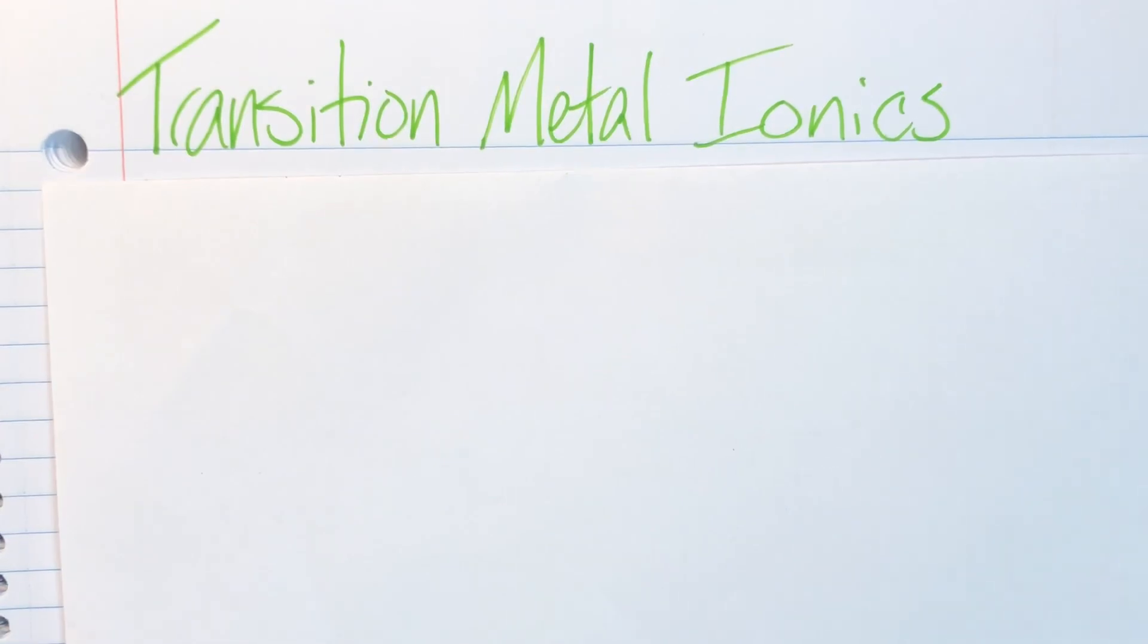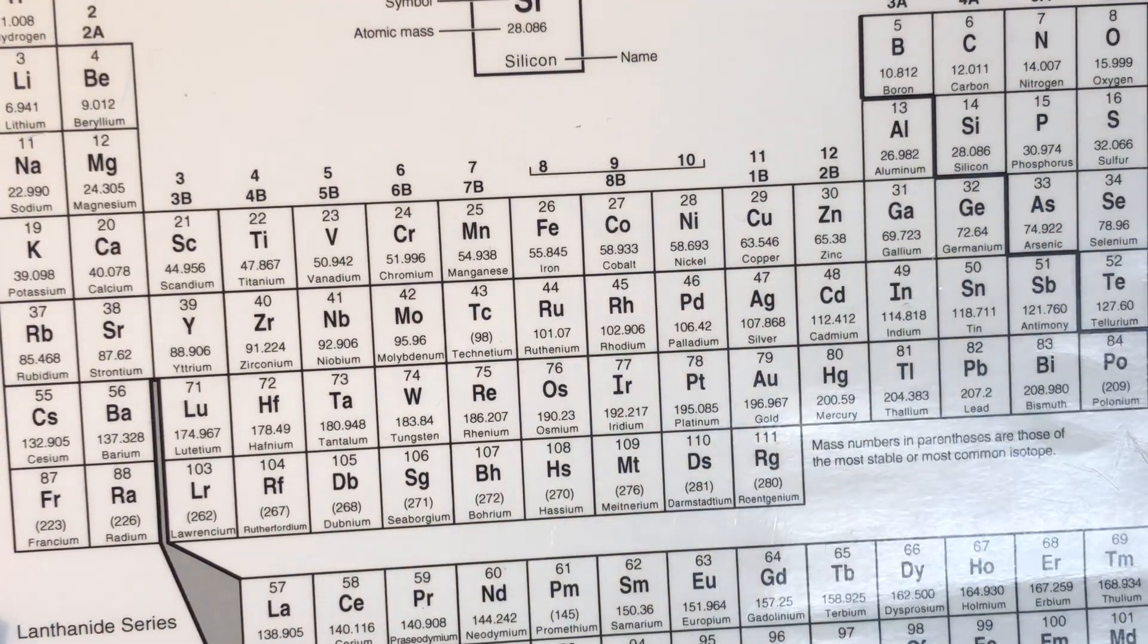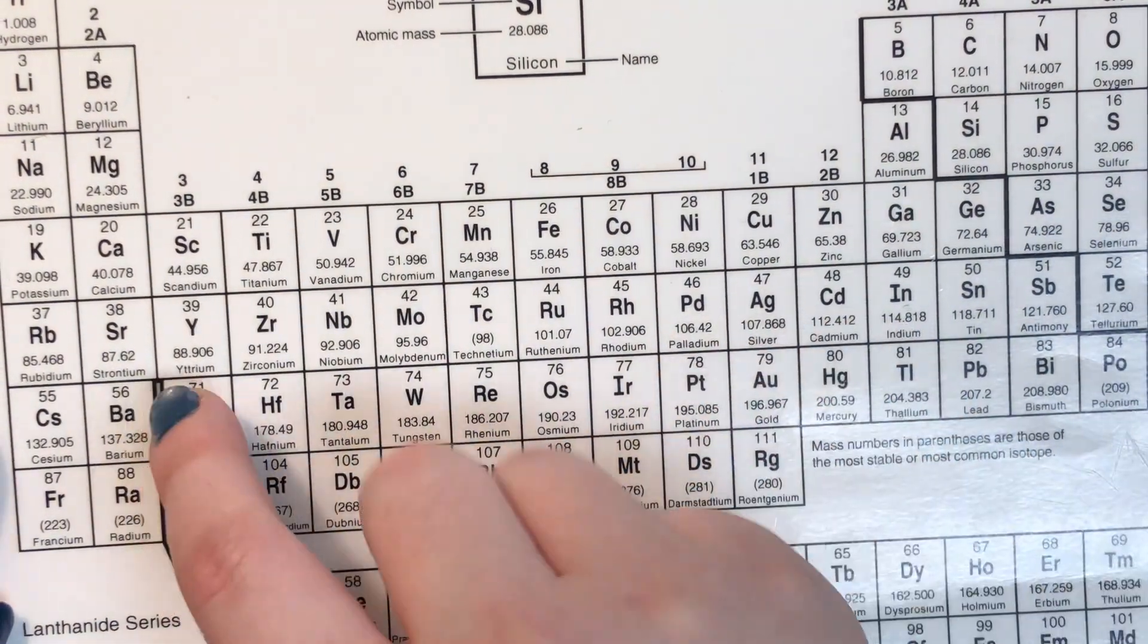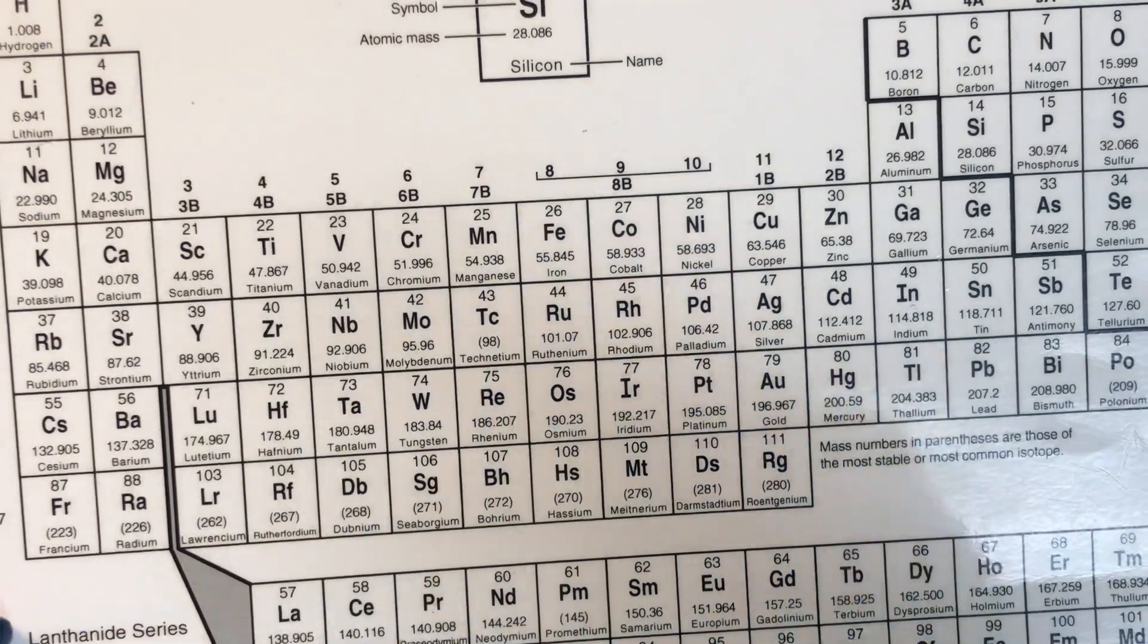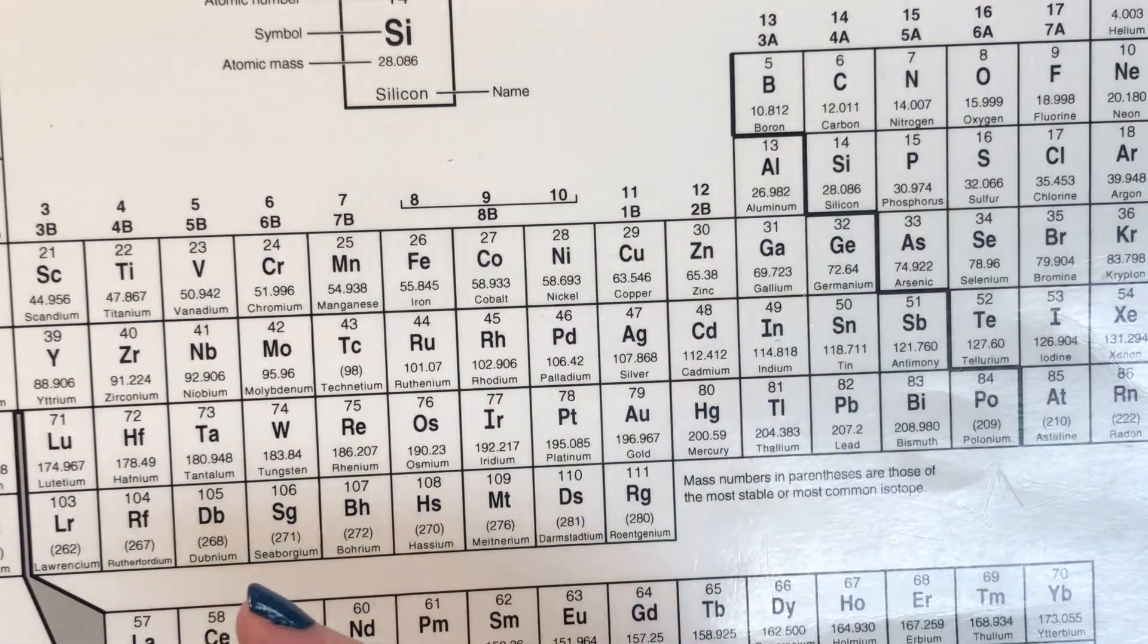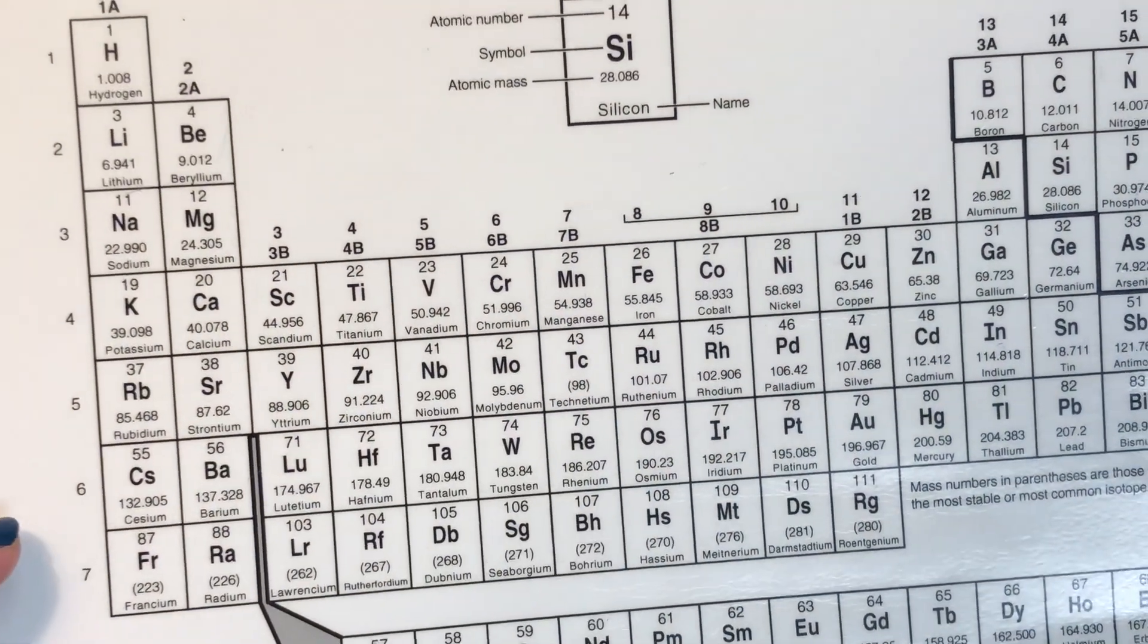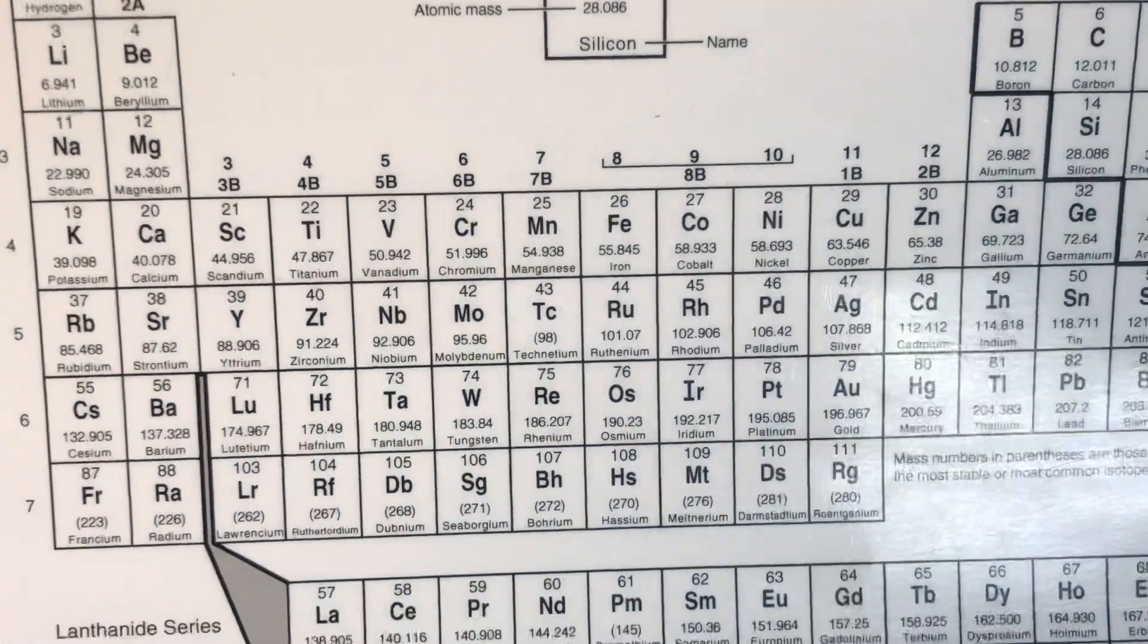Today, we're going to be talking about the nomenclature rules for transition metal ionics. This is going to be different than the representative binaries, as transition metals are not going to be in the first two columns of my periodic table. Instead, my transition metals are going to be anything that is a metal that is not in the first two columns. Basically, if it is to the left of the stair-step line and it's not in the first two columns, it is going to be a transition metal.